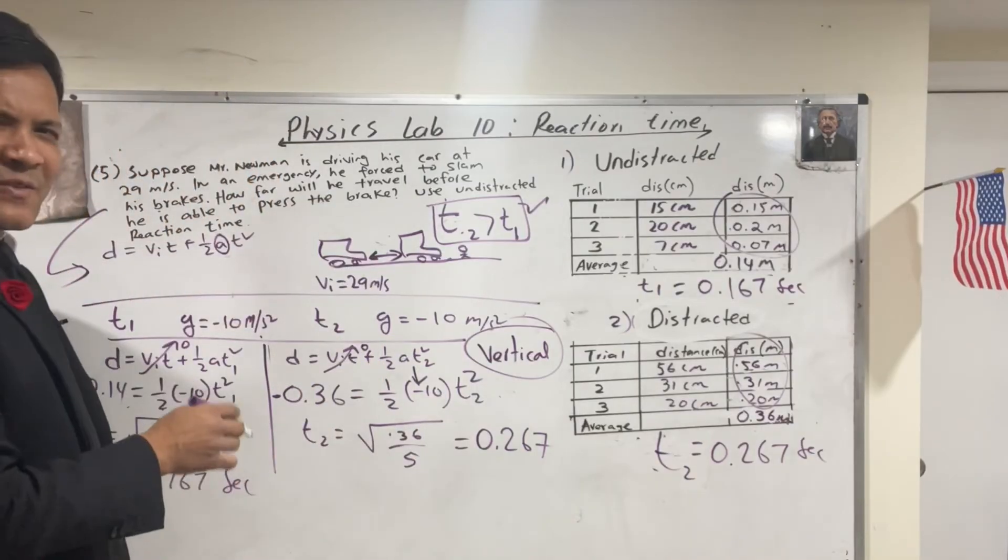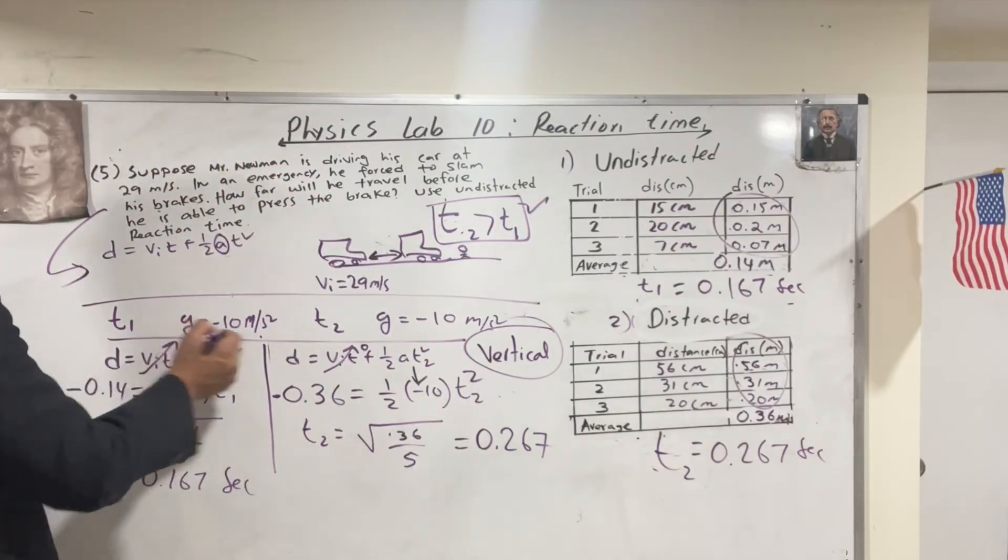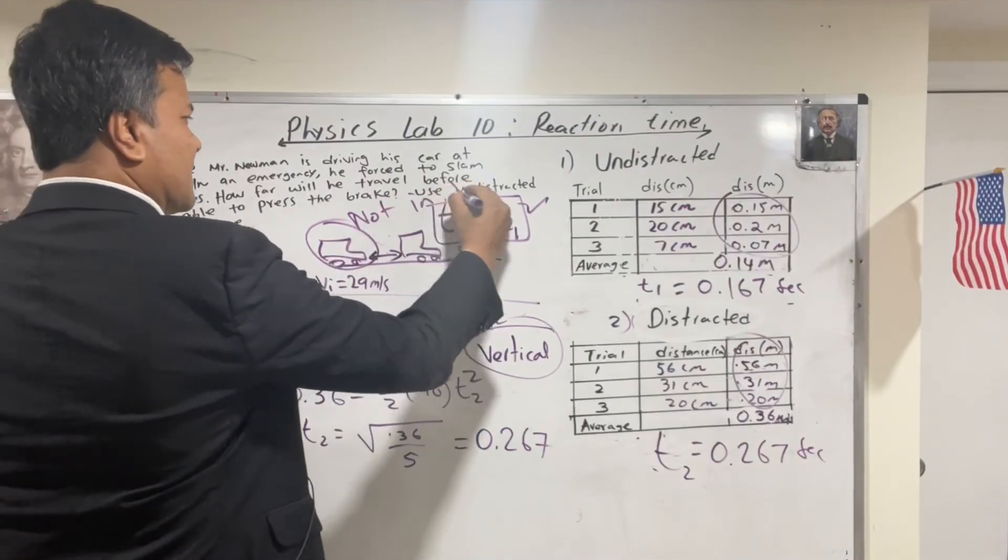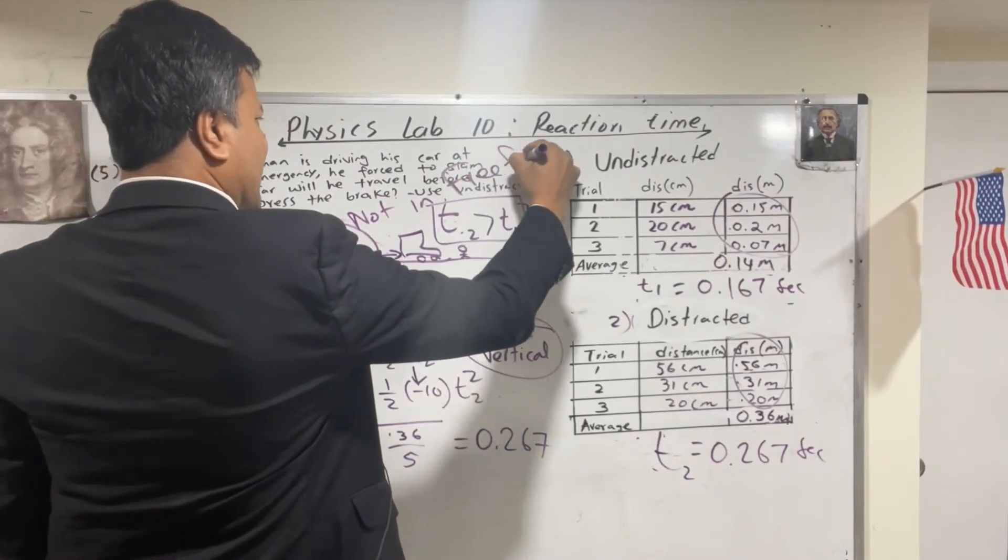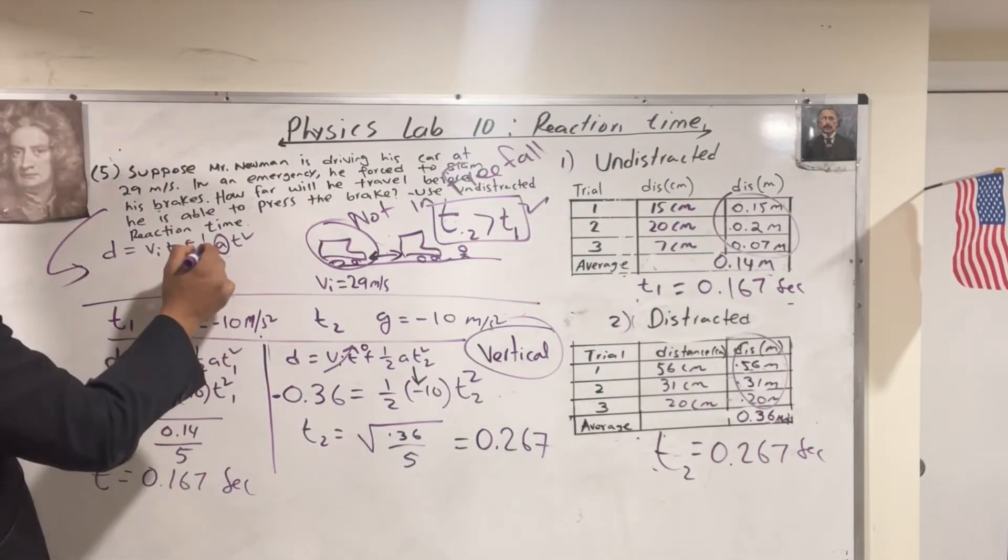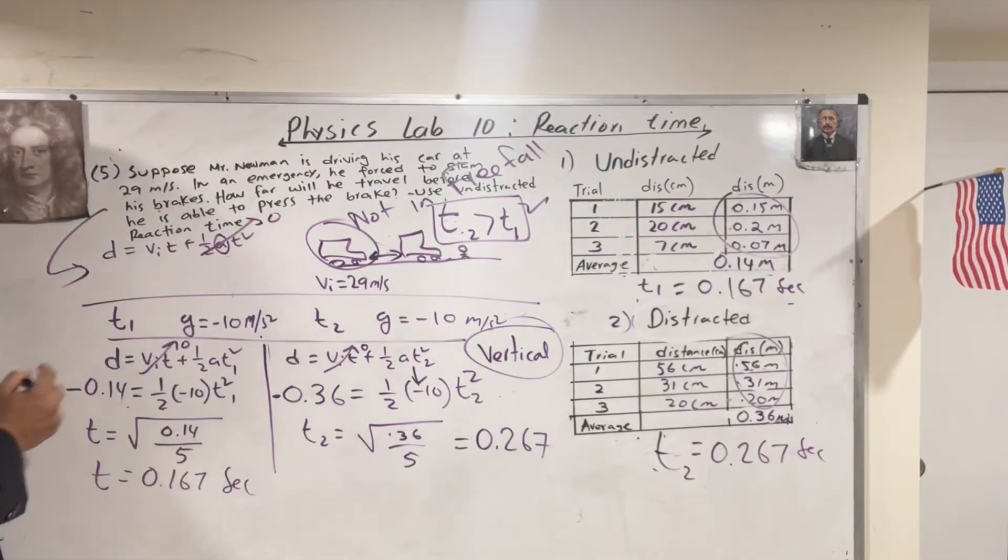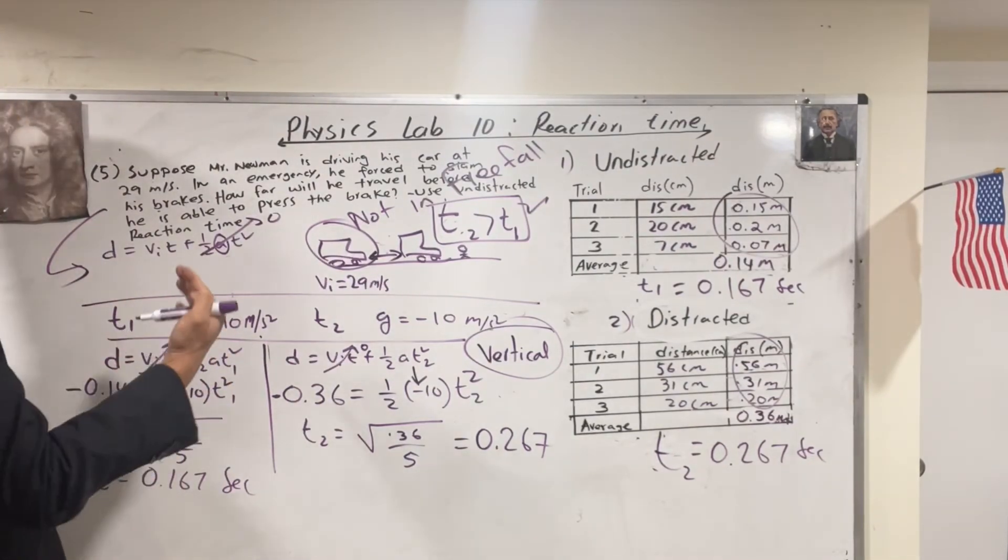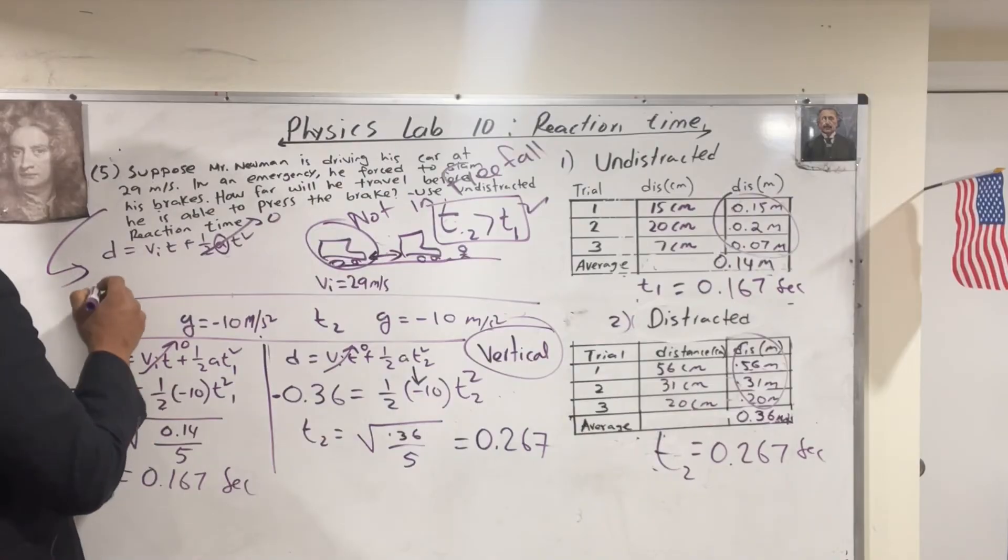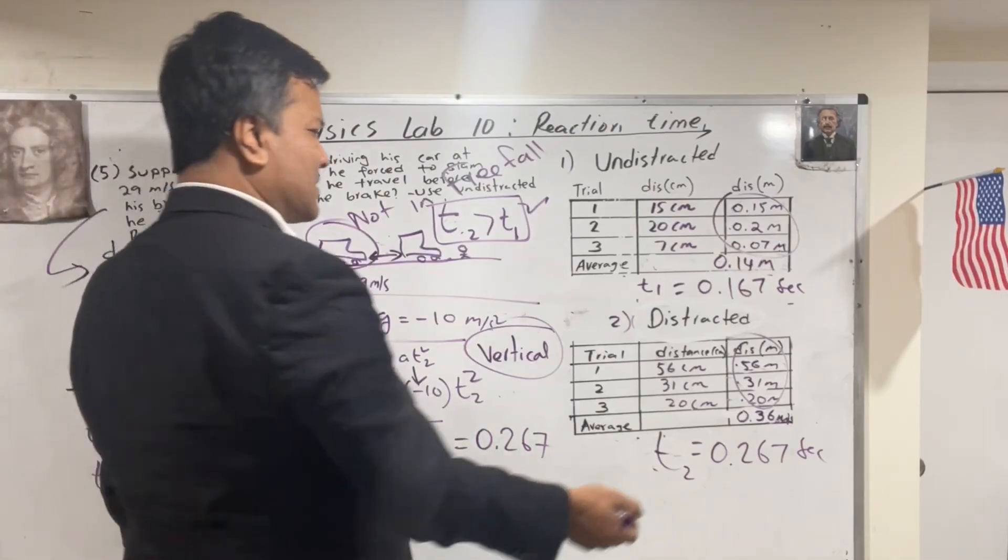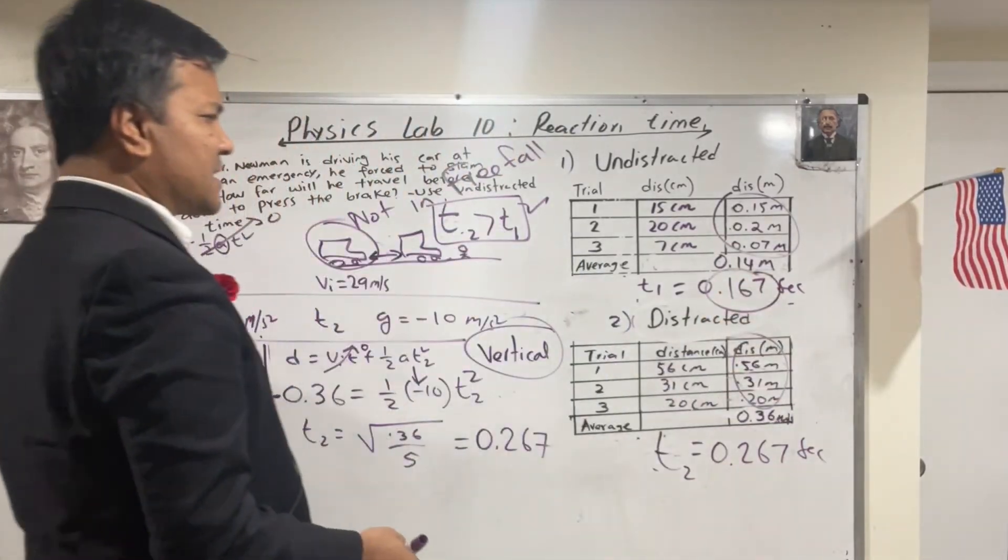This ruler was in free fall and this car is not in free fall. This car is not in free fall. So acceleration due to gravity is zero. So this become a problem like a good old velocity problem. So D is equal to 29 times the lab ask you to use the undistracted one.